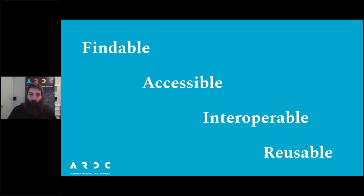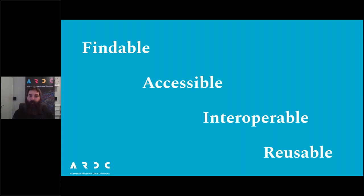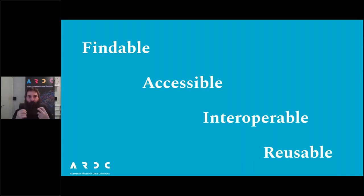So, what exactly are the four FAIR Guiding Principles? We have Findable, Accessible, Interoperable, and Reusable — four principles, four modules in this course. Findable means that metadata and data should be easy to find by both humans and computers. You should be able to work out that the data exists and also where that data might be, and there are a number of ways to take as many steps as possible to make sure your data is findable.